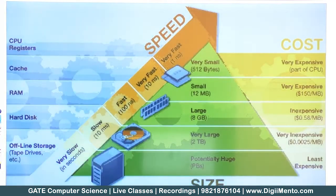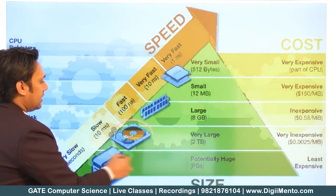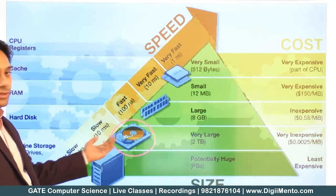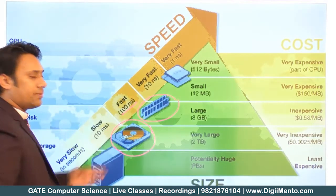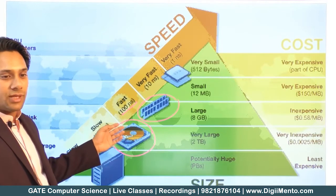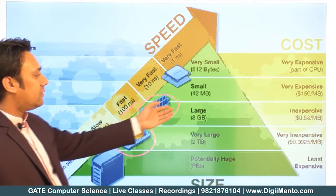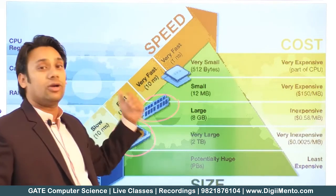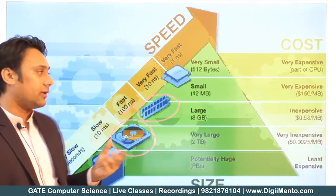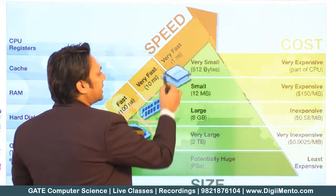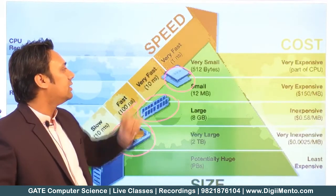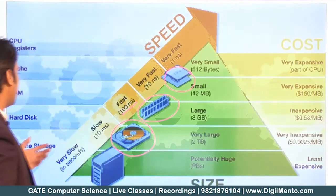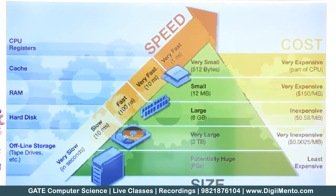So if you check here, what is given here — we have a hard disk and the access time of hard disk is 10 milliseconds and the cost is very low. And then if you take main memory, the main memory access time is approximately 100 nanoseconds, and they are a little expensive as compared to hard disk but not very expensive. And then you have cache memories which are very very fast as compared to your main memories.